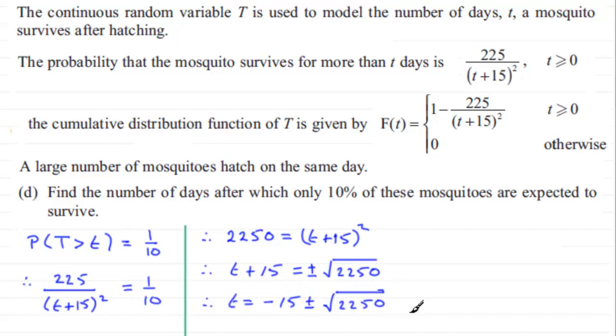If you put this through your calculator, what you'll find is that t turns out to equal two values. If you take the positive value, you'll find you get 32.434 and so on, or you'll get, if you take the negative value, t equaling -62.434 and so on.